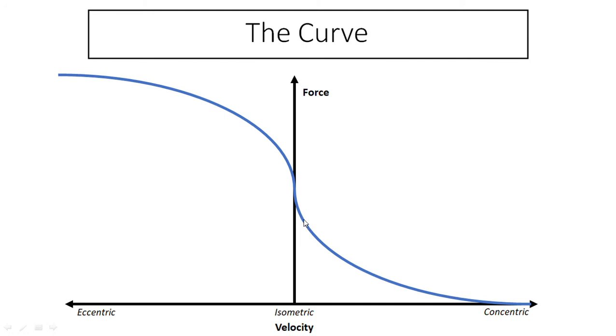If we then put 50% of our one rep max on the bar and then do the squat and squat it as fast as we possibly could, we're probably going to be somewhere around here. The force isn't going to be that high because of the lower loads. However, the velocity is going to be a lot faster because you can move 50% of your one rep max a lot faster than your one rep max.